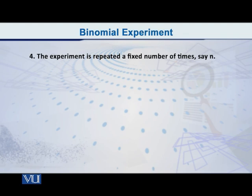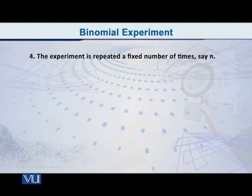There is another distribution, my dear students, in which this number is not fixed in advance. For example, there is the geometric distribution — in that, you do the experiment until you get the first success. If a tail comes first and not a head, you toss again. If a head comes, the game is over. So you see, in the geometric distribution, there is no fixed number of trials or repetitions.